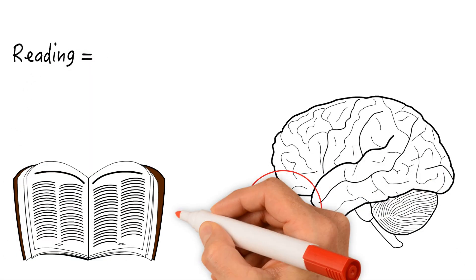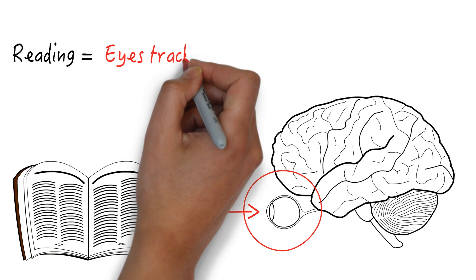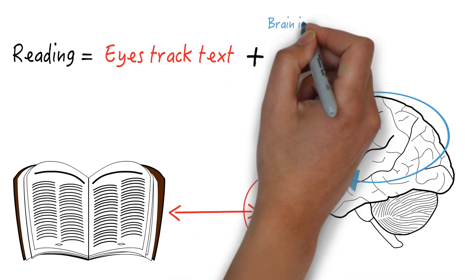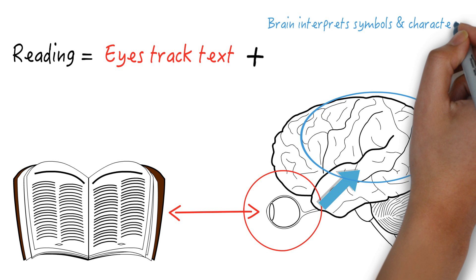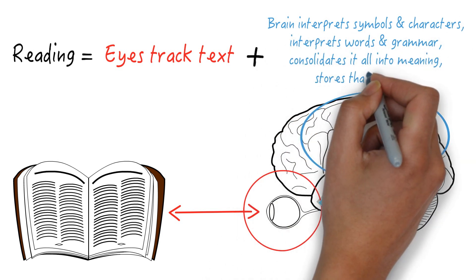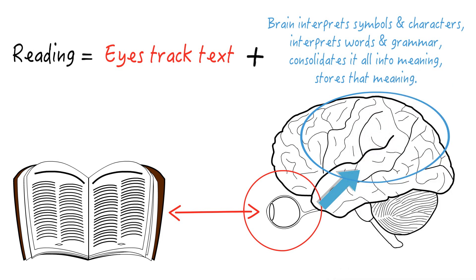To read, your eyes must first track the text. Then, other parts of your brain have to interpret the symbols and characters, interpret the words and grammar, consolidate that into meaning, and store that meaning.